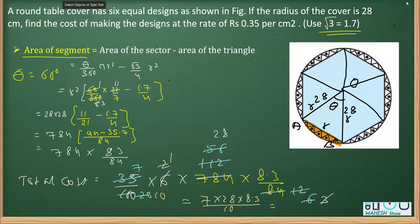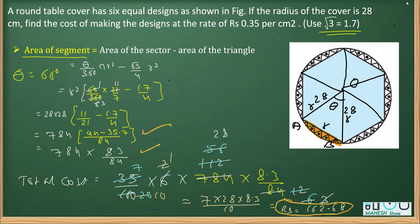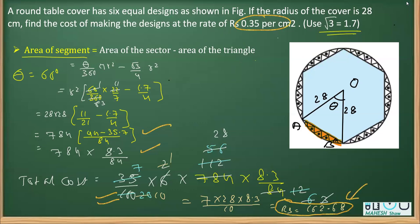Using a calculator, the final answer comes out to be rupees 162.68. In an examination, you would perform the long multiplication and division to arrive at this. So to summarize: we first calculated the area of one segment, then since all six designs are identical, we multiplied by 6 and then by the rate of 0.35 rupees per centimeter square, which gave us the total cost of rupees 162.68.